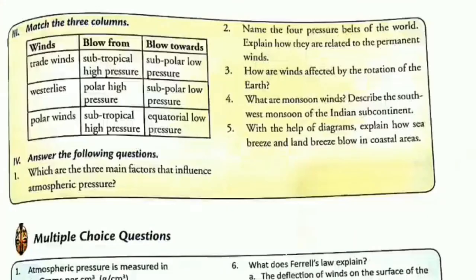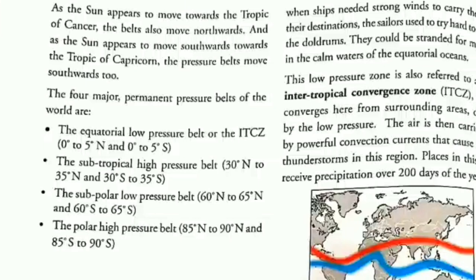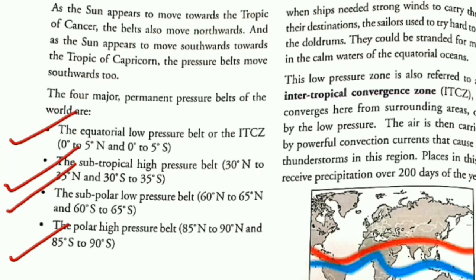Question 2: name the four pressure belts of the world and explain how they are related to permanent winds. Come to page 45-46. The four major pressure belts are: the equatorial low pressure belt, the subtropical high pressure belt, the subpolar low pressure belt, and the polar high pressure belt. Do not write what is in brackets — just write the names.